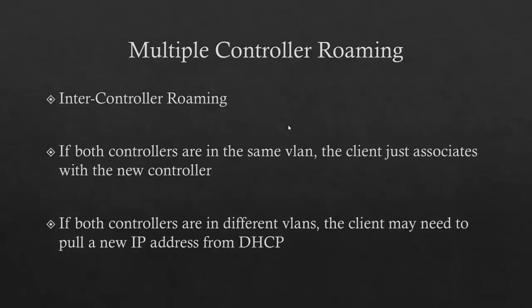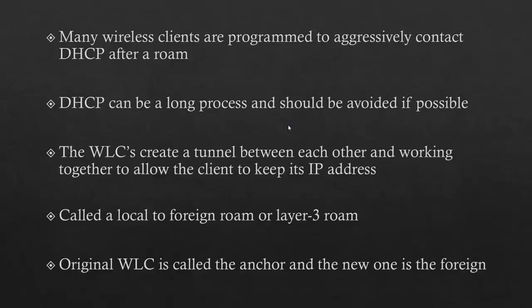Assuming both controllers are in the same subnet or VLAN, the client just has to reassociate with the new controller — re-authenticate and re-establish its connection. A couple seconds at the most if everything is right. But if both controllers are in different VLANs, the client will probably have to pull a new IP address from DHCP, delaying it even further — 15, 20, even 30 seconds depending on your network configuration. The problem is all wireless clients are very different; some are programmed to aggressively contact a DHCP service after a roam, and DHCP can be a long process — discover, offer, request, acknowledge.